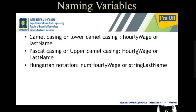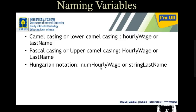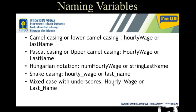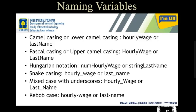Another naming convention is called Hungarian notation. Here, the type of the variable is also included with the variable name. For example, 'hourlyWage' is a number, so 'num' is prefixed — 'numHourlyWage'. 'lastName' is a string type, so 'string' is used at the beginning — 'stringLastName'. Snake casing uses an underscore to divide two words in the variable name. Mixed case with underscore uses a capital letter at the beginning of each word with underscores separating words. Kebab case uses a hyphen to separate two words.